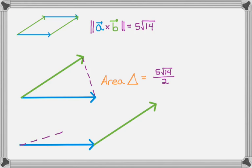Or I could have gone the other way and taken those vectors and created it there. And that's still half of the parallelogram. So the area is still just going to be half of 5 root 14. So 5 root 14 over 2.